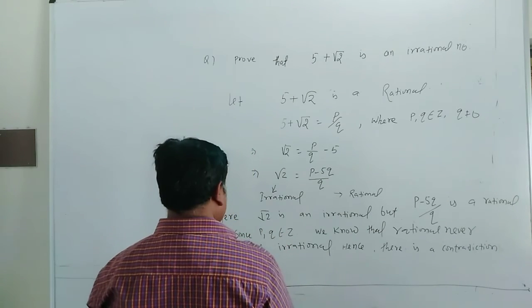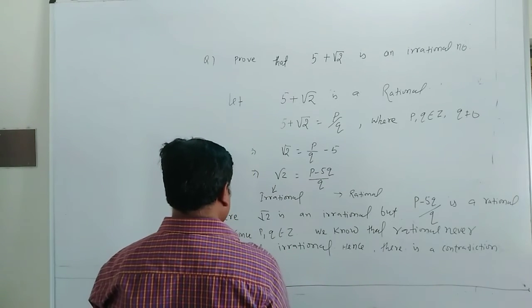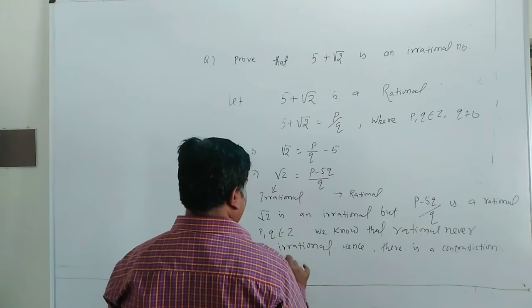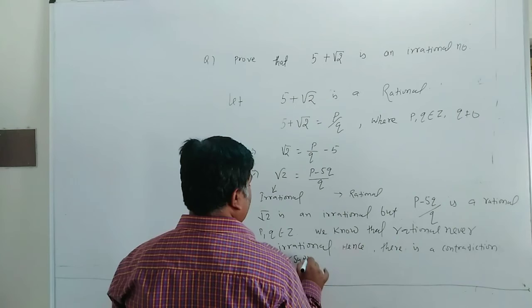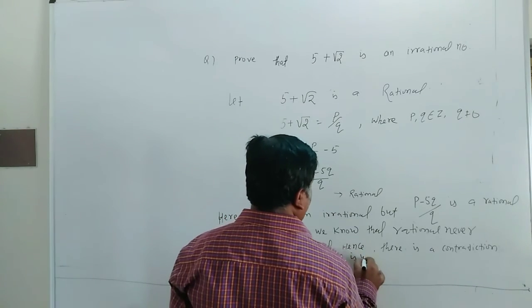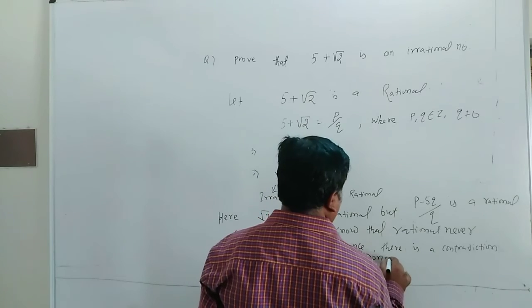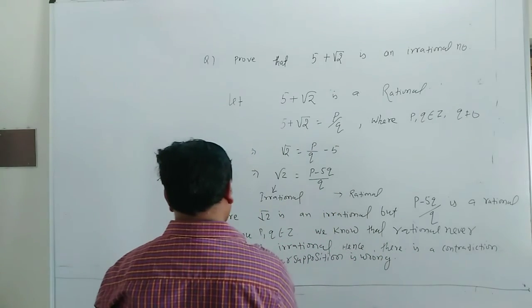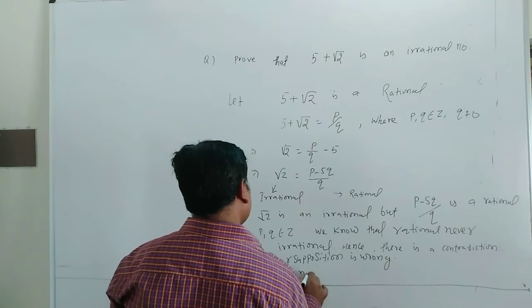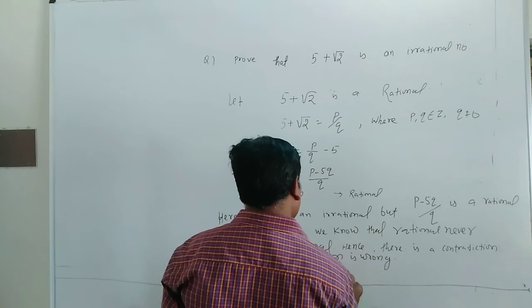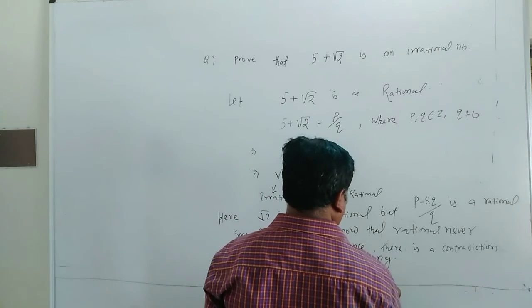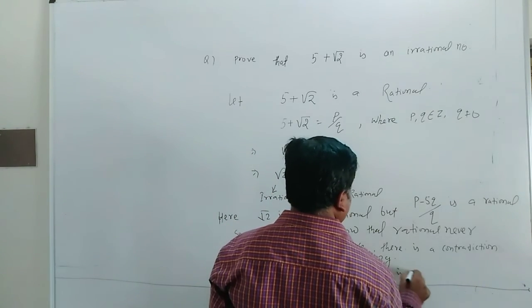Contradiction implies our supposition is wrong. That is, 5 plus under root 2 is not rational; it is irrational.